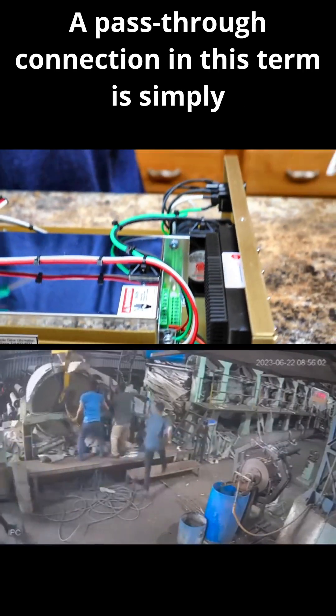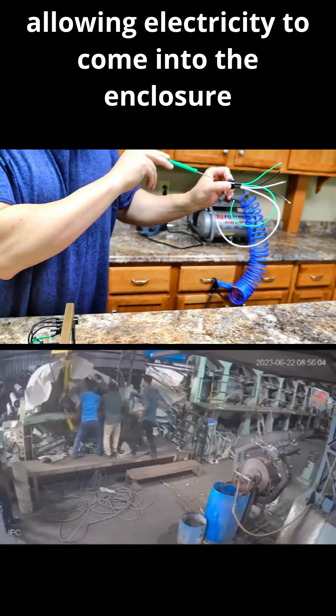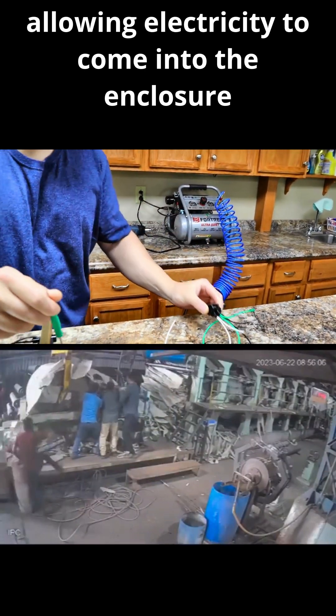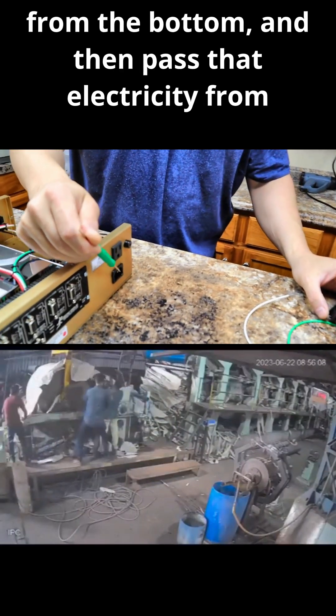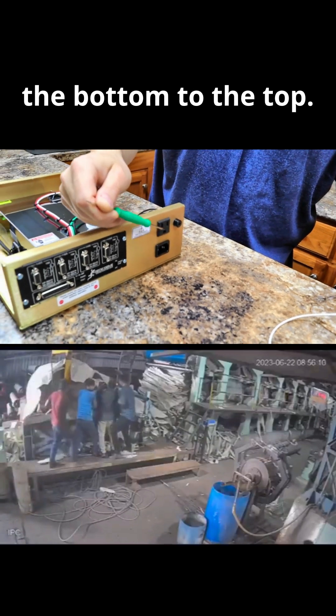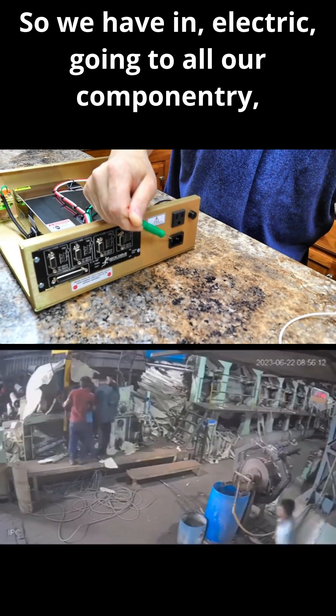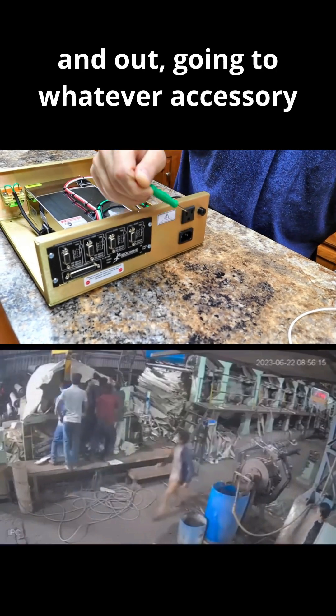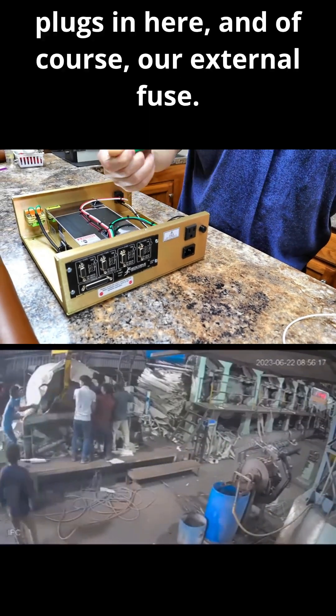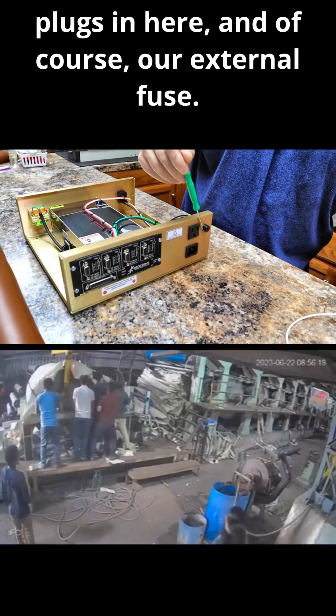A pass-through connection in this term is simply allowing electricity to come into the enclosure from the bottom and then pass that electricity from the bottom to the top. So we have electricity going to all our componentry and out going to whatever accessory plugs in here and of course our external fuse.